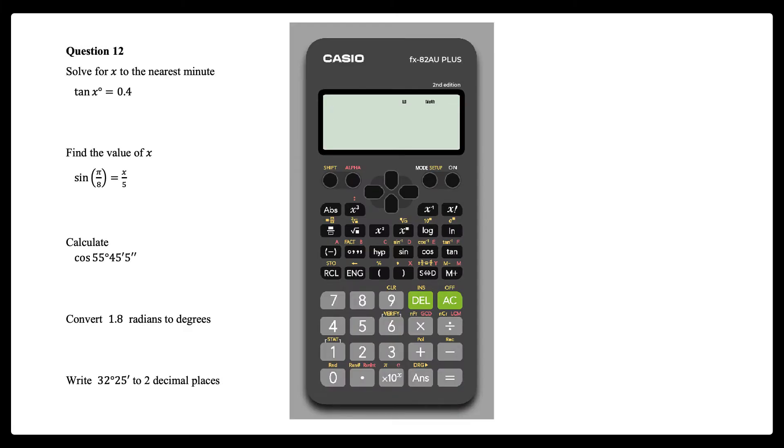With a Casio FX82AU+ or FX100AU+, a range of calculations involving angles and trigonometric ratios can be performed. When performing these calculations, it is important to know your calculator's global setting for angle measure. This can be seen by the small d, r, or g displayed at the top of the screen. This indicates the calculator is set to degrees, radians, or gradians.